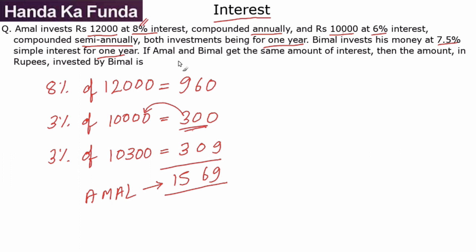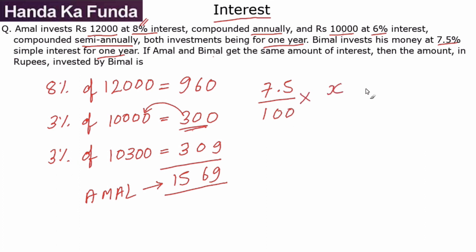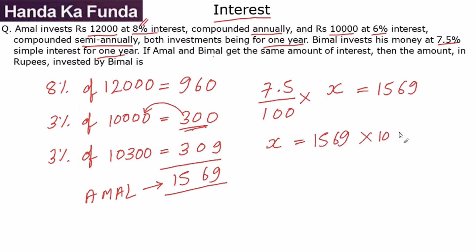That means Bimal also got 1,569 rupees. Since Bimal had invested at 7.5% simple interest, 7.5% of the money that Bimal invested equals 1,569. All you need to do is calculate the value of x, which is 1,569 into 100 divided by 7.5.